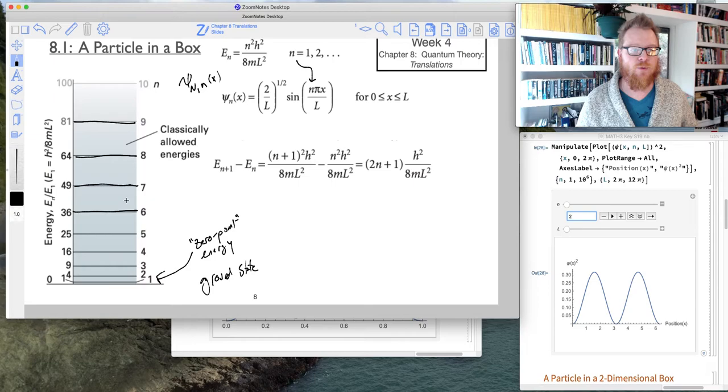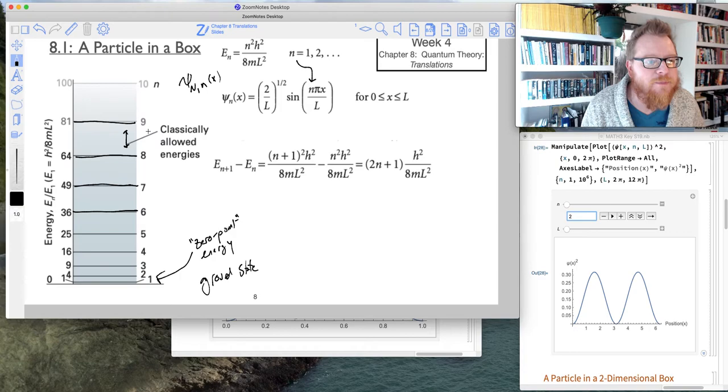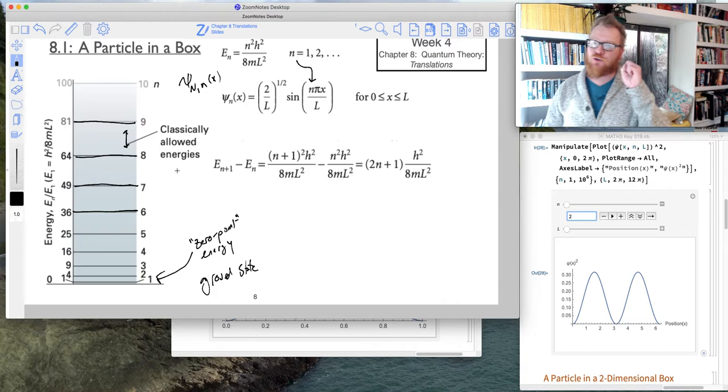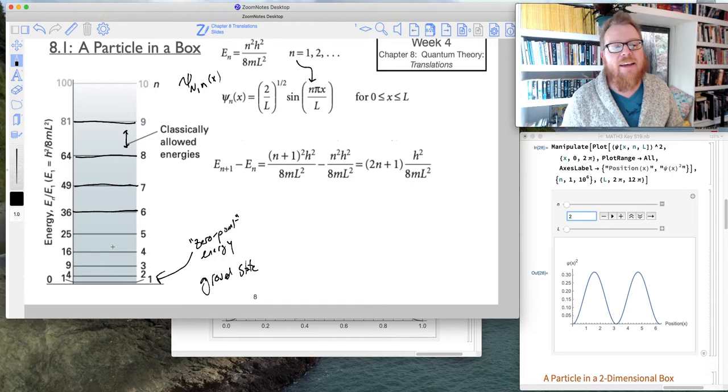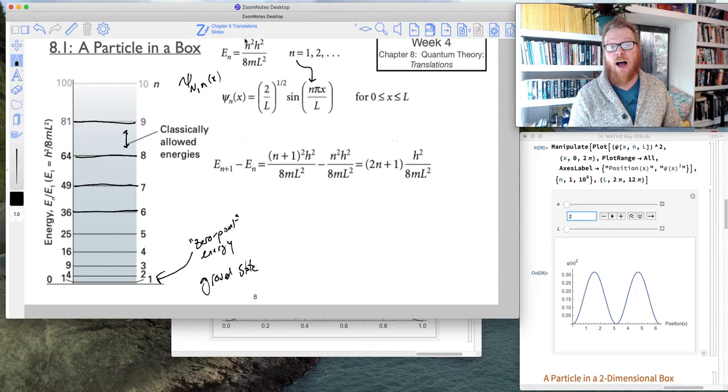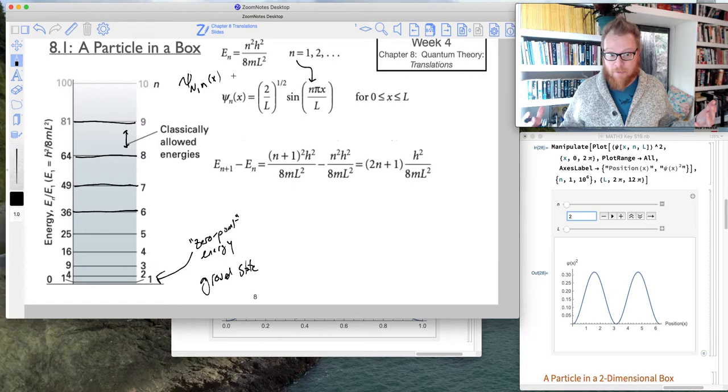This shaded area, that's kind of showing you this region between those are the classically allowed energies. So in other words, if we just truly had a particle, like a little marble, rolling back and forth, it could establish any value of energy along the scale. In other words, that value n wouldn't exist.